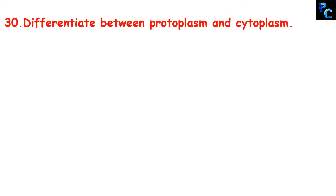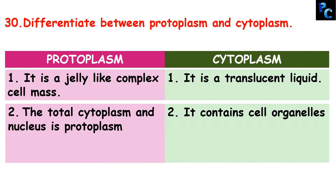Question 30: what is the difference between protoplasm and cytoplasm? Protoplasm is a jelly-like complex cell mass, while cytoplasm is a translucent liquid. The total of cytoplasm and nucleus is protoplasm. So cytoplasm is a part of protoplasm, and cytoplasm contains cell organelles.